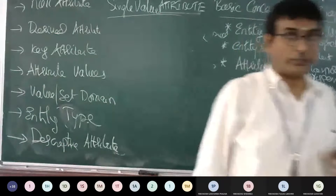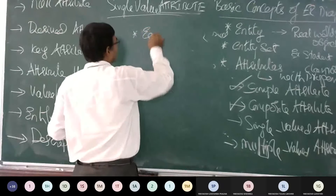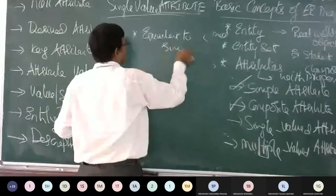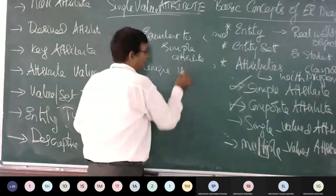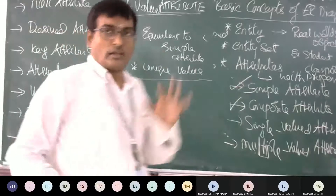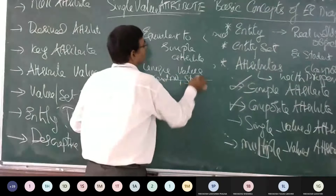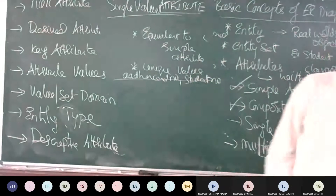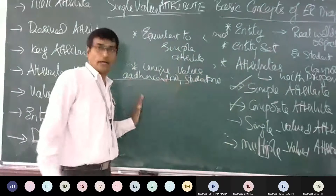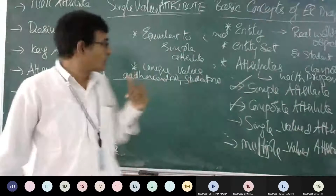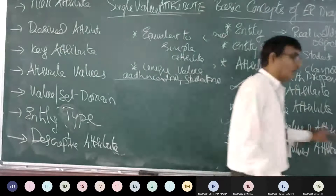Next is single-valued attributes. A single-valued attribute is similar to a simple attribute — it holds a unique single value. For example, an Aadhar card number or a student number. A single value is given to it, so it is equivalent to a simple attribute. We call that a single-valued attribute.